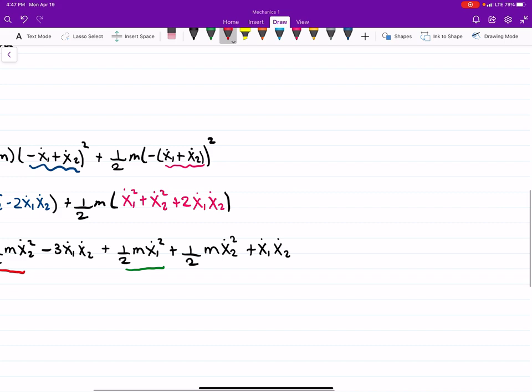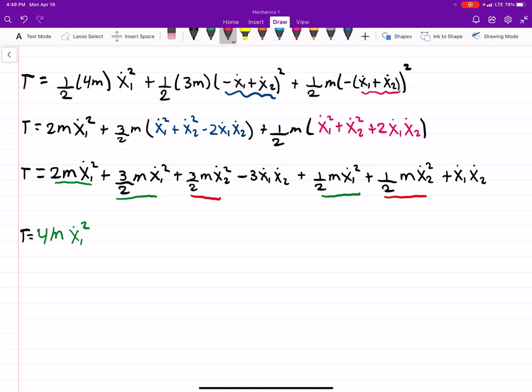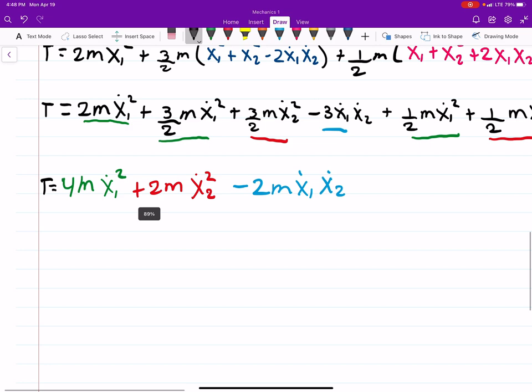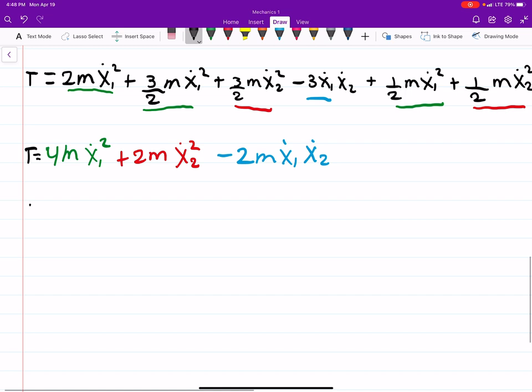Now let's see, we have this, oops, and this are the same terms. That's 4 halves, so that's going to be 2. So plus 2m x dot 2 squared. And then we have this guy and this guy, which is minus 2m x1 dot x2 dot. And that's your kinetic energy.